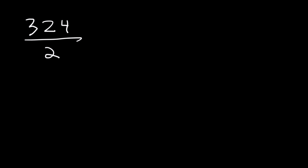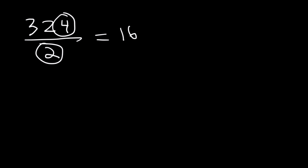Now let's move on to division. If we want to divide 324 by 2 mentally, first divide 32 by 2 — that's 16. Then divide 4 by 2 — that's 2. So 324 divided by 2 is 162. You can verify with a calculator.